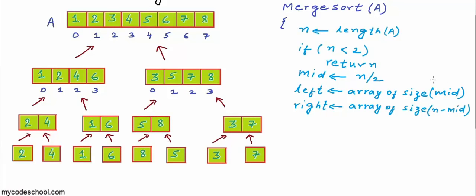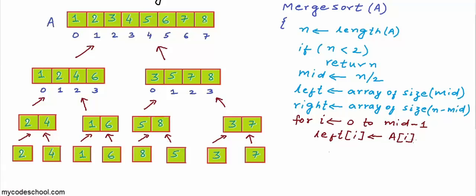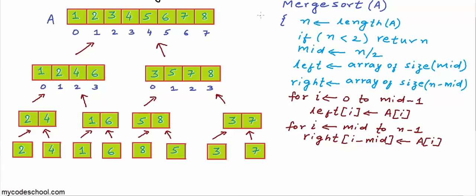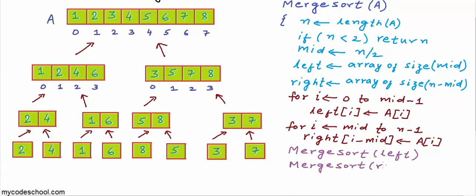The first array will have elements from index 0 to mid minus 1 — we run a loop from 0 to mid minus 1 and set left[i] = A[i]. We run another loop from index mid to n minus 1 and set right[i - mid] = A[i]. Now that we have created left and right sub-lists, we make a recursive call to sort the left sub-list, then once done, a recursive call to sort the right sub-list. Once both are sorted, we call the merge function to merge left and right back into A.